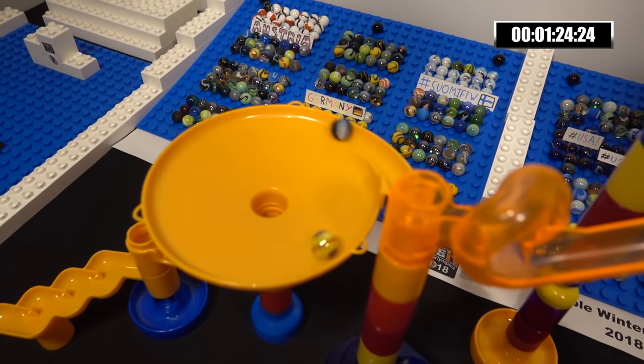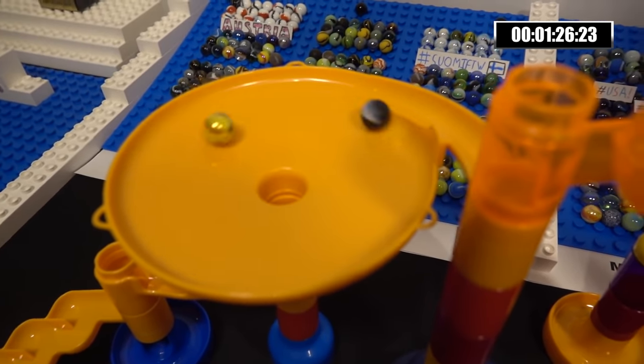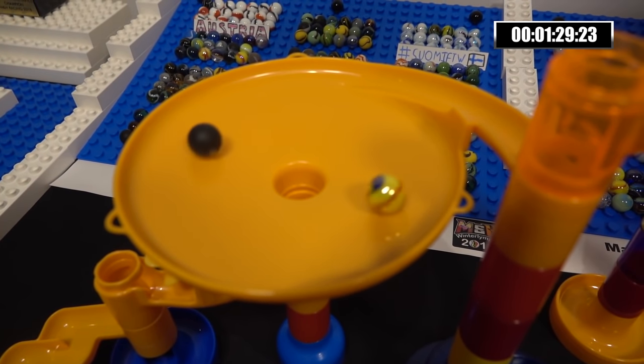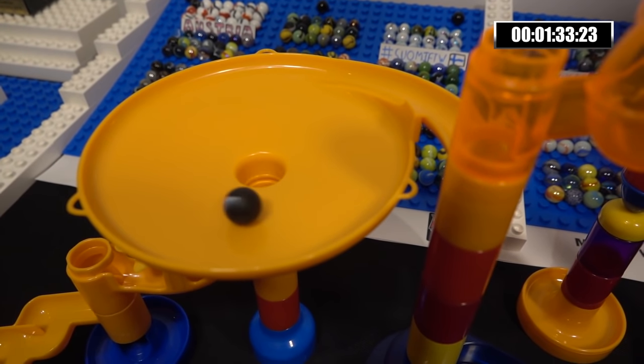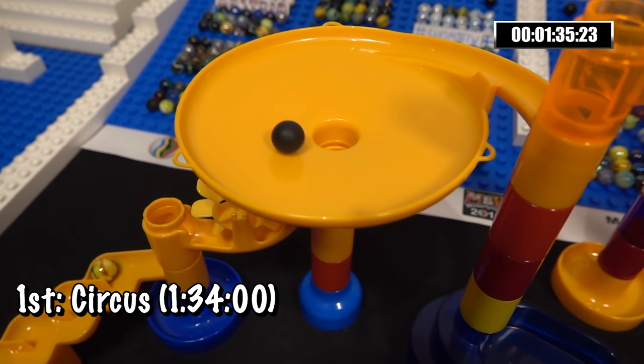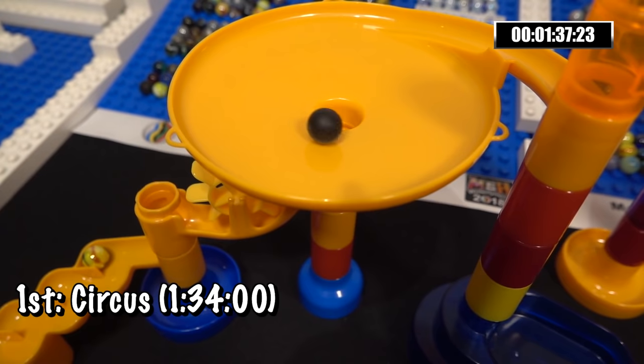Now, it doesn't take Black Hole long to catch up. Here we go, guys. The most intense part of the race. Both marbles are now duking it out in the final stretch with the race still uncertain. Circus still keeps the lead. Will Black Hole take it back? No, he can't. Black Hole makes another move and Circus somehow reads it.